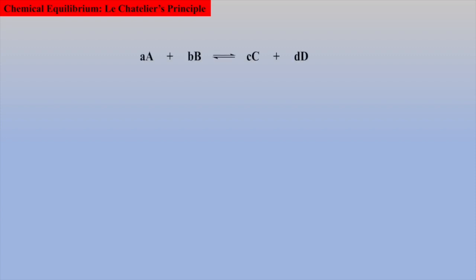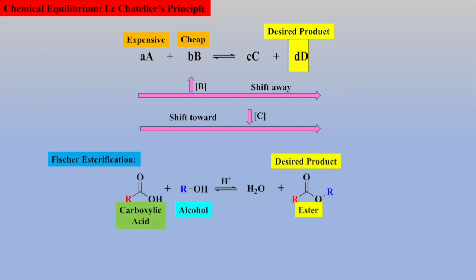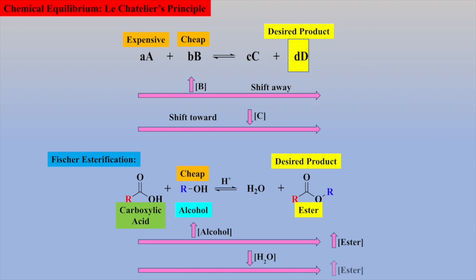Le Chatelier concepts can be employed to synthesize a desired product within an equilibrium by either adding a huge excess of one of the reactants — usually the cheaper one — or by removing one of the products as it is formed. For example, in the synthesis of esters from a carboxylic acid and alcohol, one could add excess alcohol (typically the cheaper reactant) to drive the reaction to the right and form more of the desired ester, or one could remove the water as it forms via a Dean-Stark trap, which will also drive the equilibrium to the right.